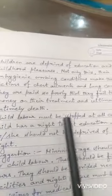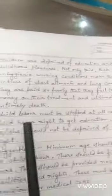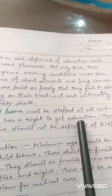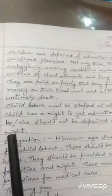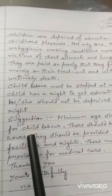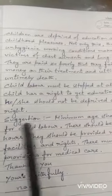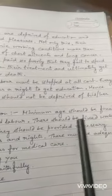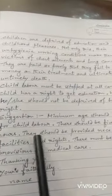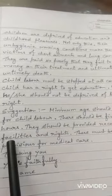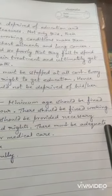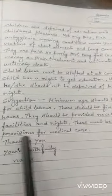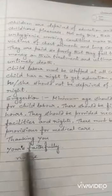Child labor must be stopped at all costs. Every child has a right to get education. Hence, he or she should not be deprived of his or her rights. Here are the suggestions: minimum age should be fixed for child labor; there should be fixed working hours; they should be provided necessary facilities and rights; there must be adequate provisions for medical care. Thanking you. Yours faithfully. Then write your name.